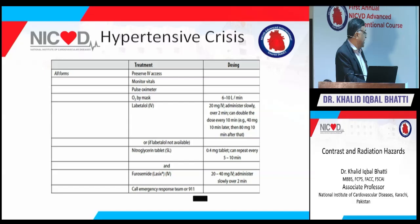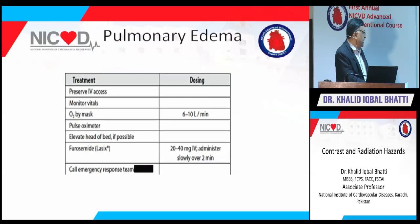In a hypertensive crisis, follow the ABC rule: preserve IV access, monitor vitals, and check oxygen saturation with a pulse oximeter. Give oxygen through a mask. IV labetalol or nitroglycerin may be needed, and sometimes IV furosemide. For pulmonary edema, follow the same rules — elevate the head of the bed and administer furosemide.